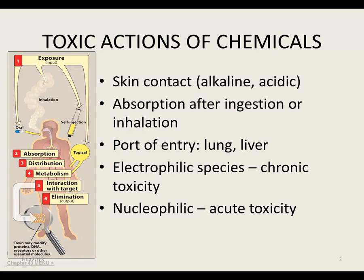Toxic chemicals from the environment may contact the skin and/or be absorbed after ingestion or inhalation. These exogenous chemicals are distributed to various organs where they may be metabolized to products that may be more or less toxic than the original parent chemical. The parent compound or its metabolites interact with target macromolecules resulting in a toxic effect. Any tissue or organ within the body can potentially be affected by a chemical toxin, and indeed most chemicals adversely affect more than one tissue.